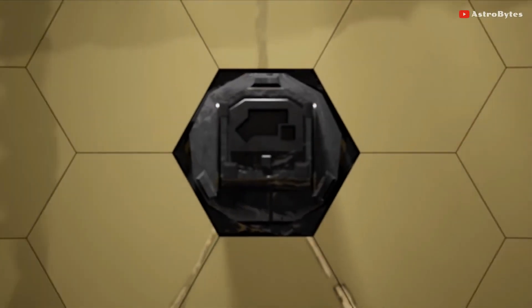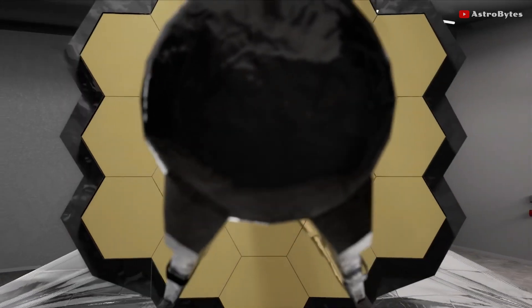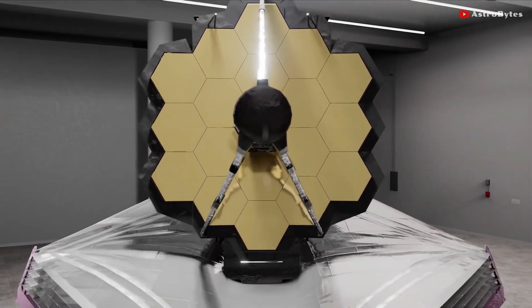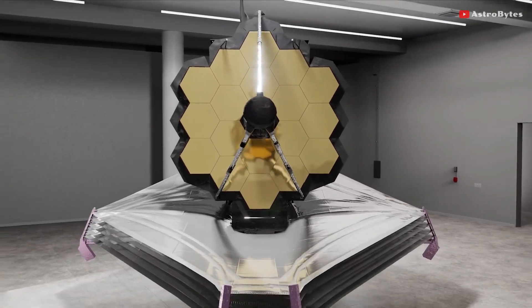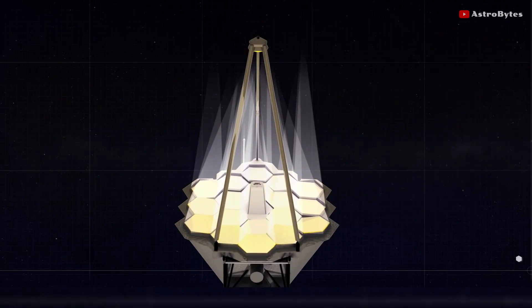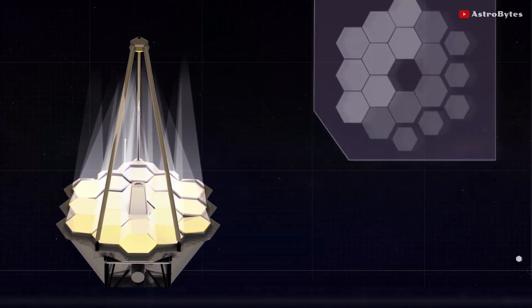Although segmented telescopes have been built on Earth, Webb is the first space telescope with a segmented mirror, consisting of 18 discrete hexagonal segments. The alignment of these mirrors is crucial; they need to be within nanometers to form a single mirror surface.